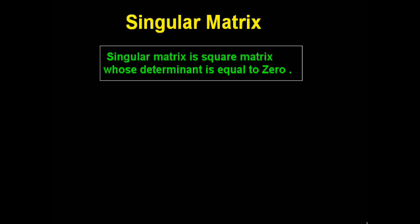Hello friends and students, welcome to the next topic: singular matrix. A singular matrix is a square matrix whose determinant is equal to zero. If the determinant is not equal to zero, it is not a singular matrix. Also, if it is not a square matrix, we cannot compute its determinant, so both conditions must apply.